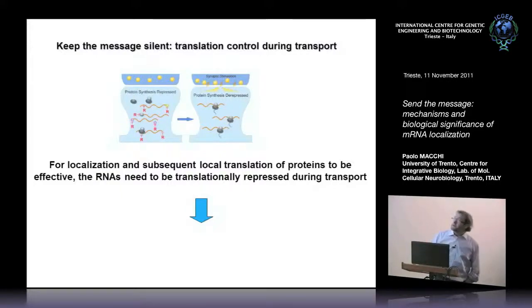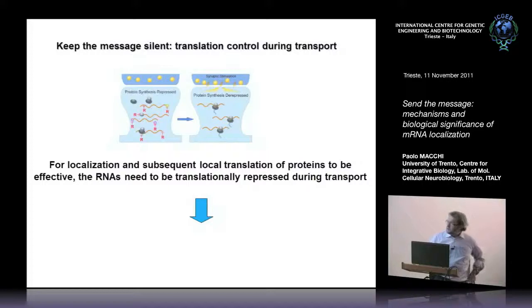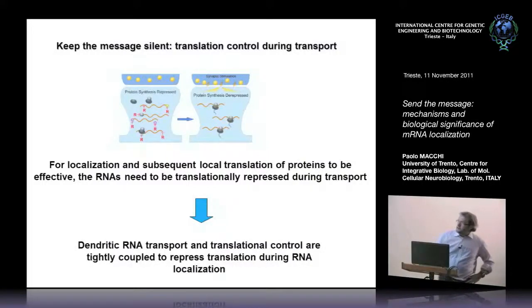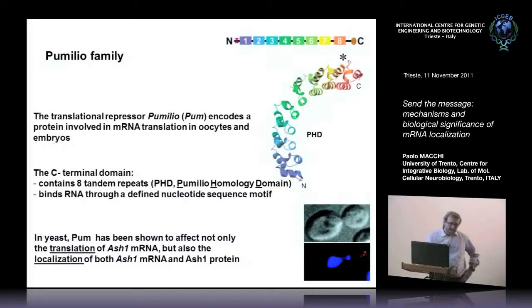The last part deals with another aspect of mRNA transport. For localization and subsequent local translation of proteins to be effective, RNAs need to be translationally repressed during transport. It makes no sense to transport the RNA and then translate it en route. The RNA must be kept translationally silent during transport. Dendritic RNA transport and translational control are therefore tightly coupled.